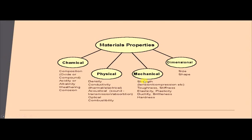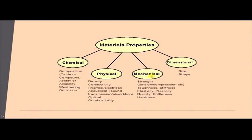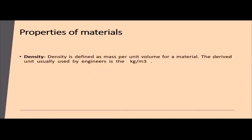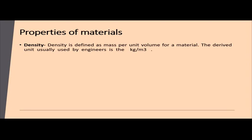In mechanical properties there are strength — which includes tensile strength, compressive strength, shear strength, and creep strength — toughness, stiffness, elasticity, plasticity, ductility, brittleness, and hardness. In our subject we will mostly study physical and mechanical properties of material. Dimensional related properties include size and shape.